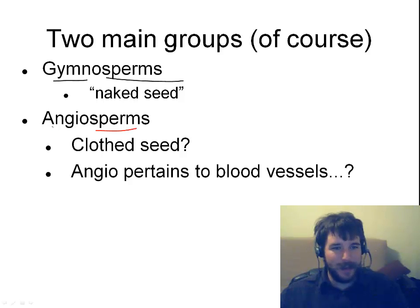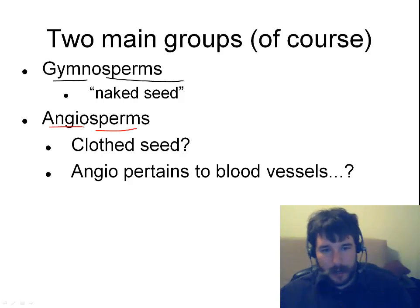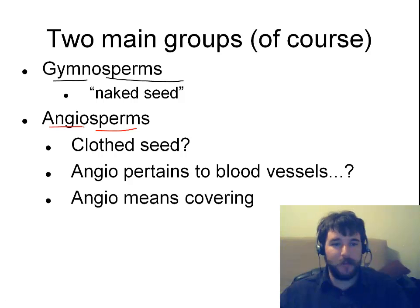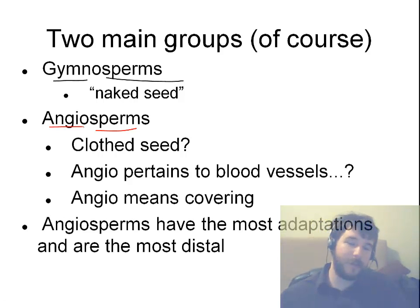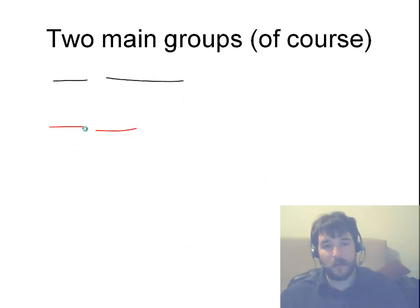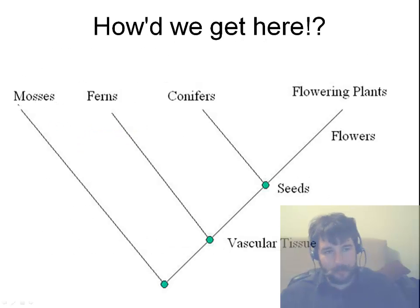The seed is covered in a coating. 'Angio,' like your blood vessels, means covering or coating. Angiosperms have the most adaptations, therefore they're most distal in the clade. Let's check out the cladogram.